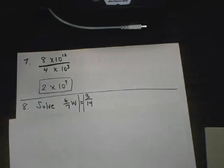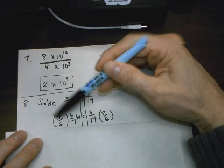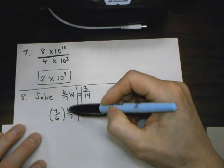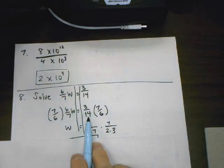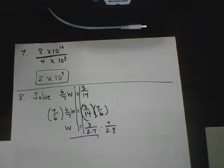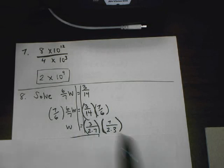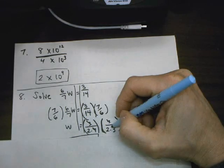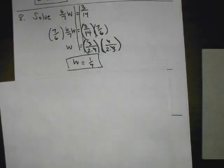Number 8: we're solving the equation 6/7 times W equals 3/14. To isolate W, multiply both sides by the reciprocal of 6/7, which is 7/6 — that's the multiplicative inverse, making the coefficient become 1. So I flip 6/7 upside down and multiply both sides. Using factor trees: 14 is 2 times 7, 6 is 2 times 3. Cross out the 7s and the 3s top and bottom, and the answer is W equals 1/4.